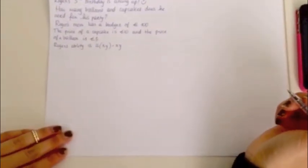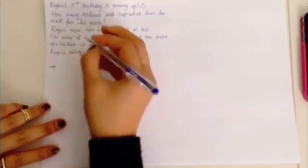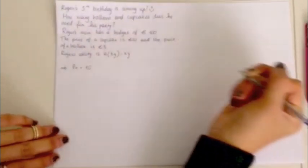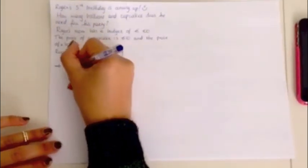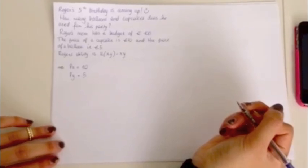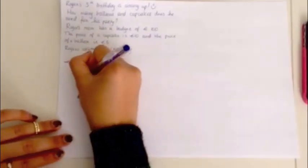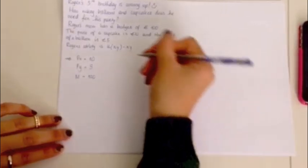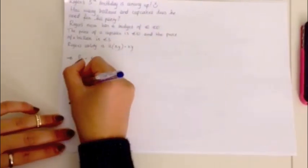So, first, we should write down the price of X and the price of Y. So, let's say that cupcakes are X. So, therefore, PX equals 10, and PY equals 5. And our budget, M equals 100. So, we can then write our budget constraint by saying 10X plus 5Y equals 100.